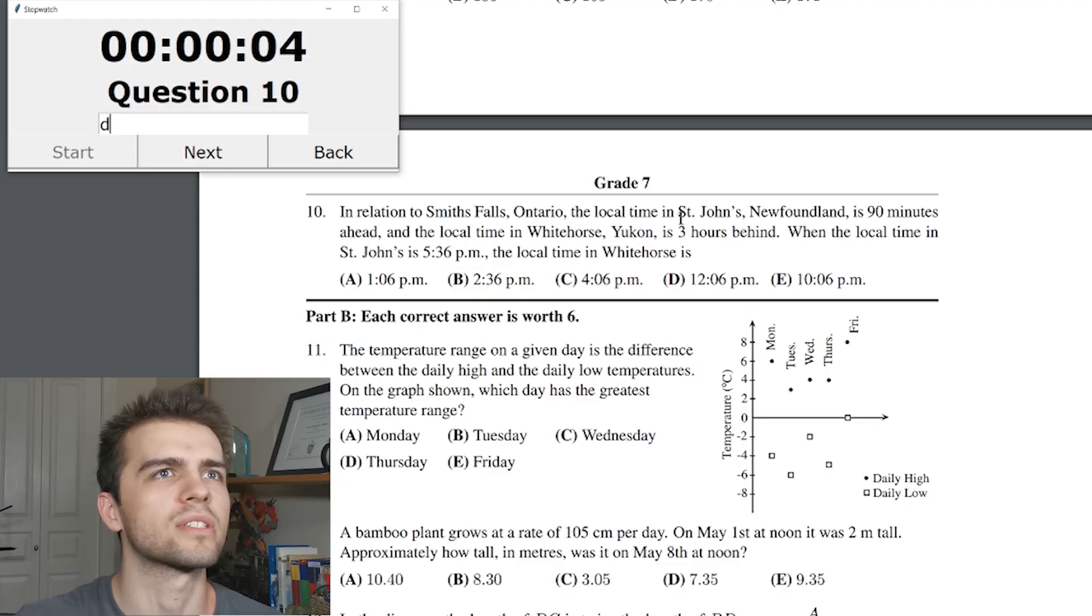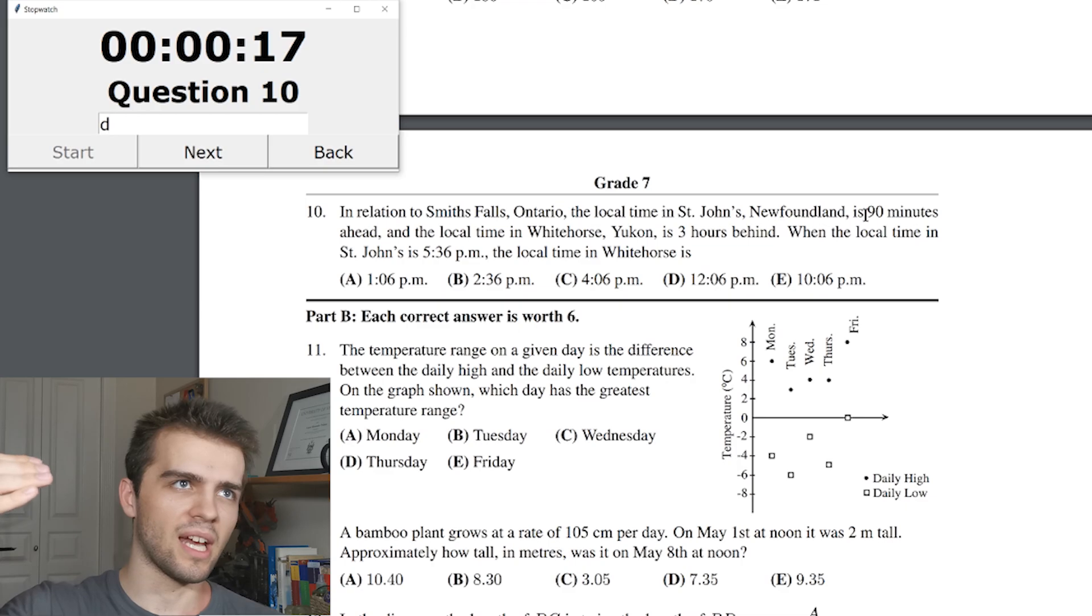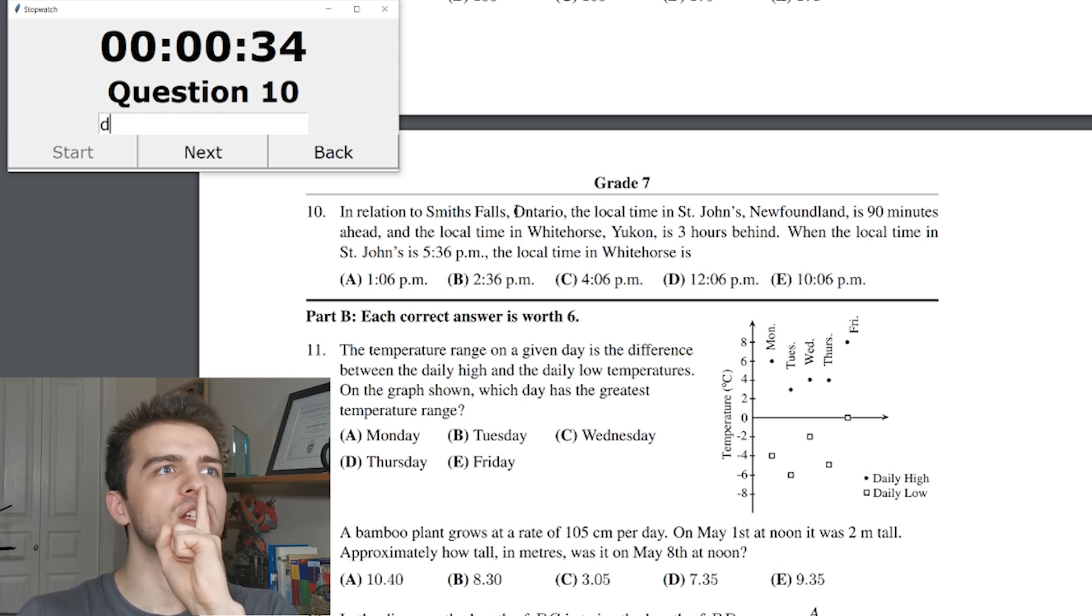No. In relation to Smith Falls, Ontario, the local time of St. John's, Newfoundland is 90 minutes ahead, and the local time of Whitehorse is 3 hours behind. Smith Falls, Ontario is 90 minutes ahead. St. John's is 90 minutes ahead. So, Smith Falls, Newfoundland is 90 minutes ahead. Whitehorse is 3 hours behind. When St. John's is 5:36, Smith Falls is 90 minutes behind. 4:06.